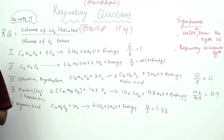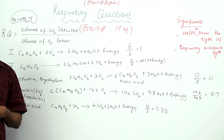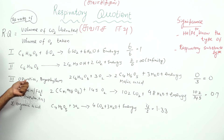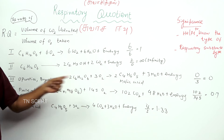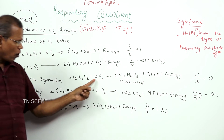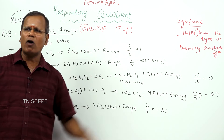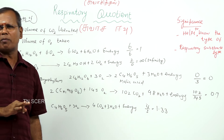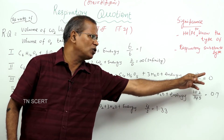Succulent plants like Opuntia and Bryophyllum — xerophytic plants. The equation is: 2C₆H₁₂O₆ plus 3O₂. Three molecules of oxygen are taken and malic acid is produced, but carbon dioxide is not evolved. So, 0 by 3 is equal to 0. The respiratory quotient of succulent plants like Opuntia and Bryophyllum is 0.